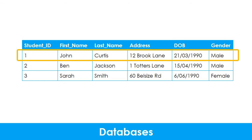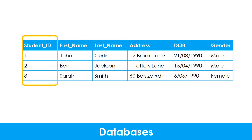It is important that each record in the database is unique. So what happens if there are two people with exactly the same details? This problem is solved using a primary key. This is a special field which uniquely identifies each record. In this table, the student ID field is the primary key.